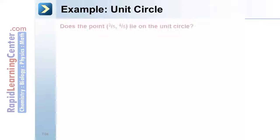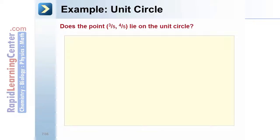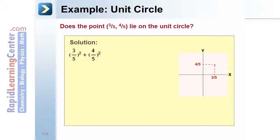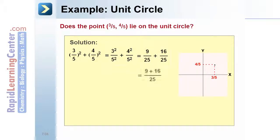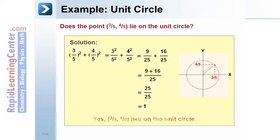Does the point (3/5, 4/5) lie on the unit circle? Solution: Determine if the point lies on the unit circle by plugging the given values into the equation. (3/5) squared plus (4/5) squared simplifies to 9/25 plus 16/25. Adding the fractions gives 25/25. The sum of the squares of the coordinates equals 1. Therefore, (3/5, 4/5) lies on the unit circle.